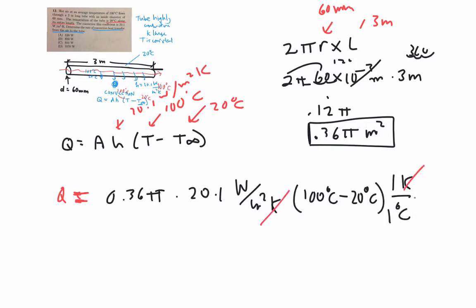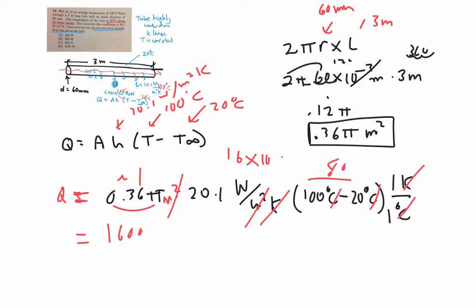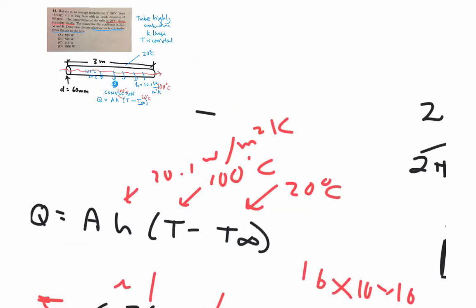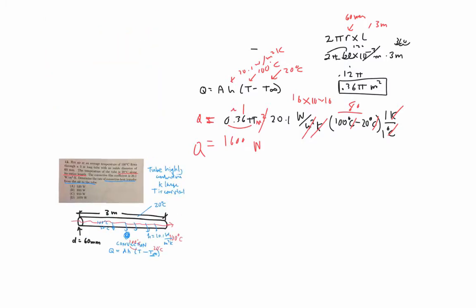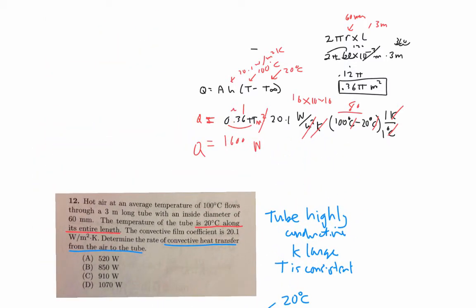The units cancel — watts per meter squared kelvin, times kelvin, times meter squared gives watts. Doing this roughly in my head: about 1 times 20 times 80 is about 1600. That's kind of far off from the answer options, so I would guess option D, but let me use a calculator to make sure. So we have 0.36 pi times 20.1 times 80, let's see what we get.